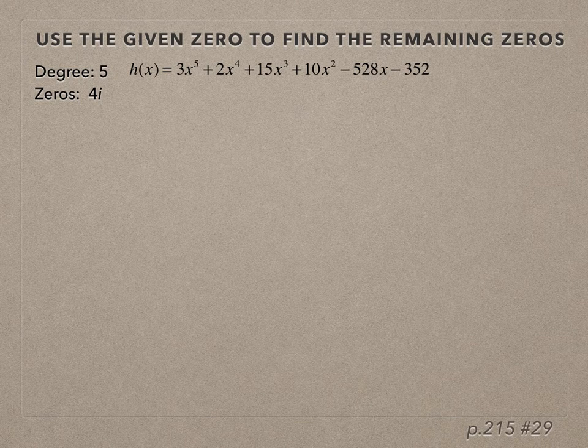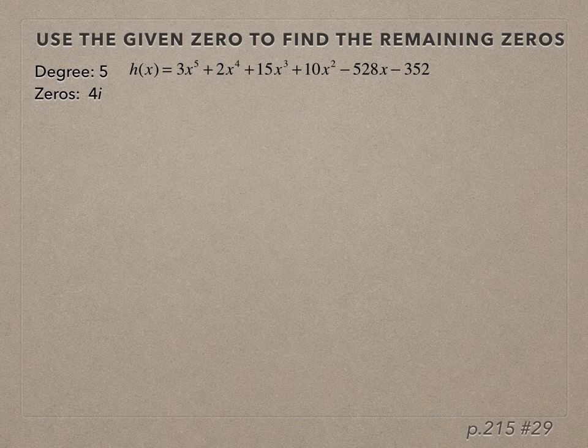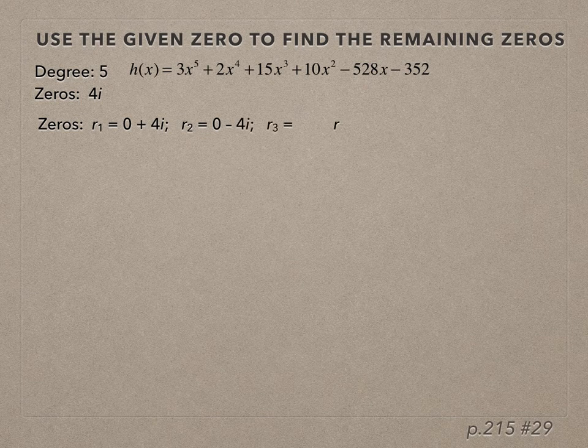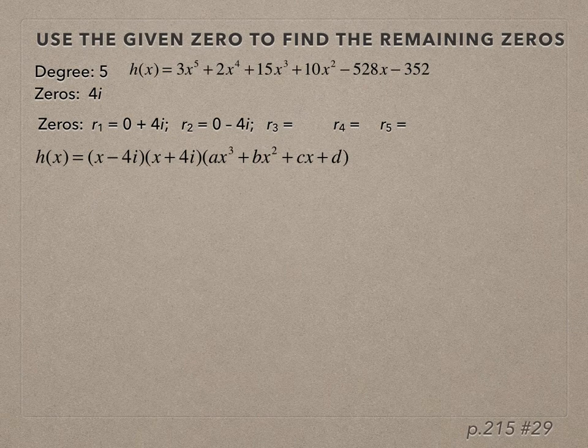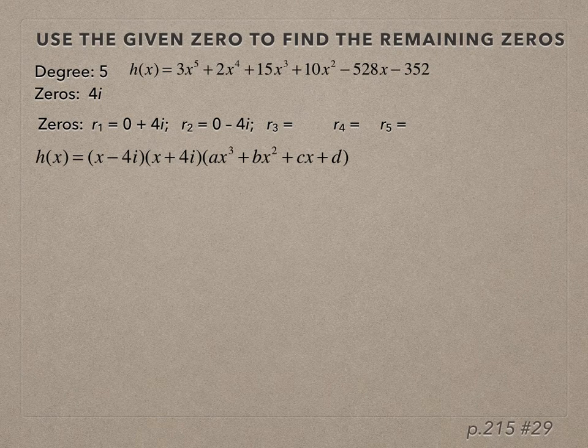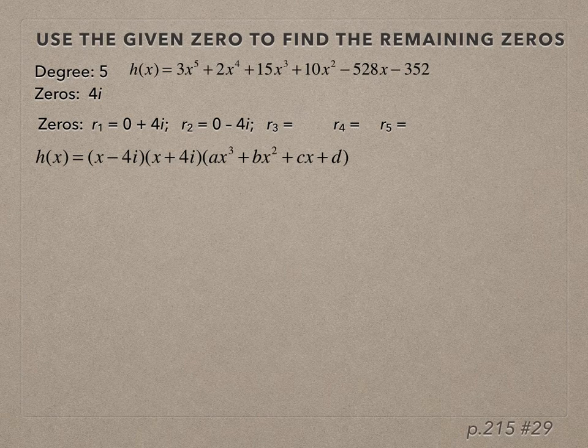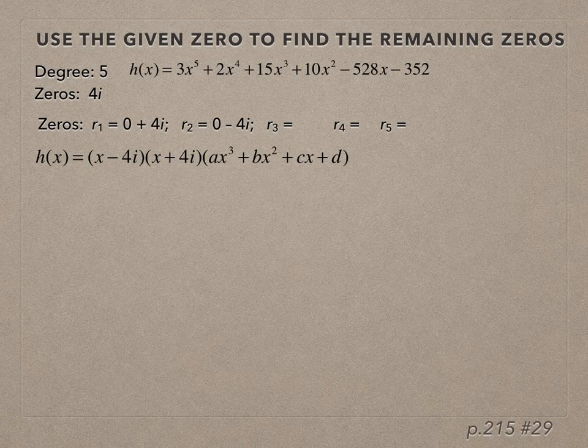If 0 + 4i is one root, then 0 - 4i is another root. So we now know two of the five zeros of this function. We can write the function in factored form: (x - 4i)(x + 4i) times some leftover cubic polynomial factor. What we want to do is figure out what that cubic factor is.